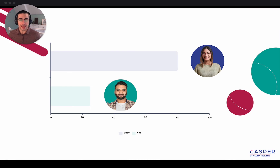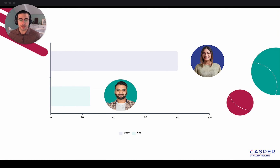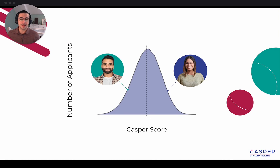The CASPER score captures these 14 impressions. Lucy's score placed her in the 80th percentile among the top of all applicants she wrote with. Jim's score placed them in the 25th percentile, indicating that the raters evaluated most other applicants more favorably.